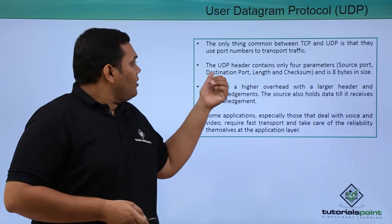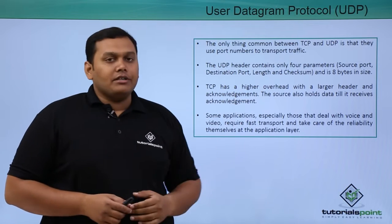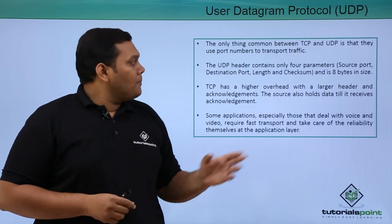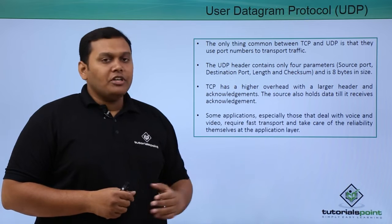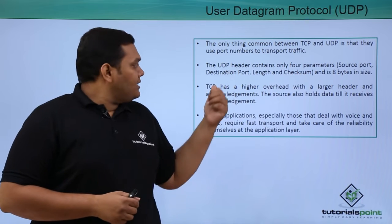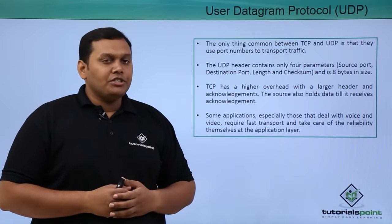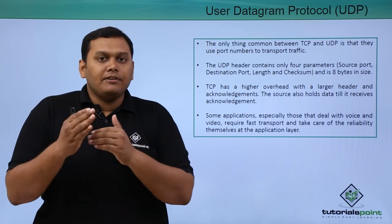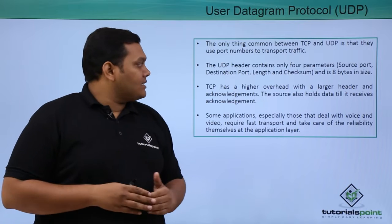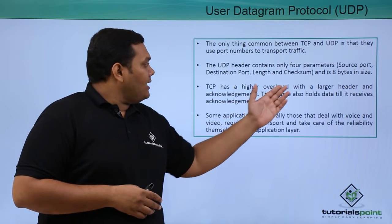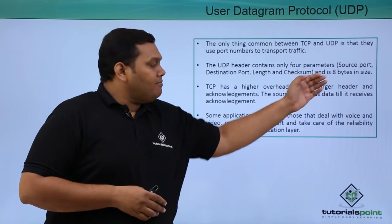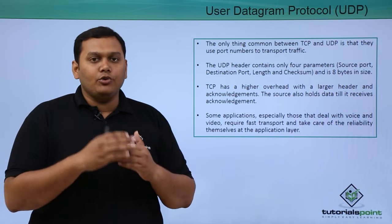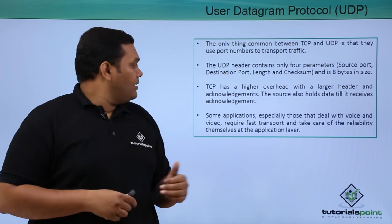The UDP header contains only four parameters: source port information, destination port information, length, and checksum field. The UDP header is only 8 bytes in size.